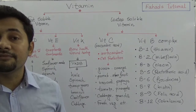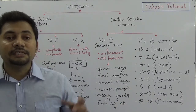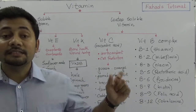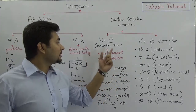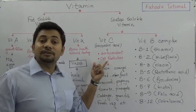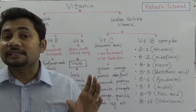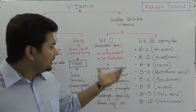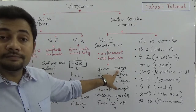Now for the water-soluble vitamins. Vitamin C is known as ascorbic acid. It functions as an antioxidant and is important for cell production. There are many food sources of vitamin C, including guava, orange, pamelo, star fruit, broccoli, papaya, tomato, pineapple, cabbage, green cherry, and fresh vegetables.